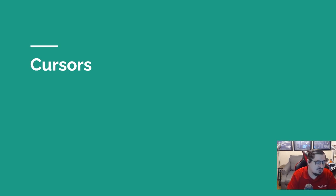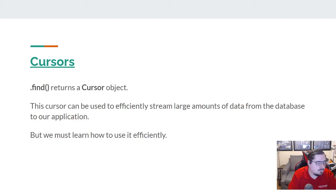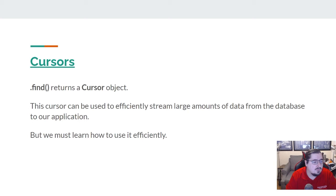I'm going to talk a little bit about cursors here. I'm not going to go too deep on them because I'll reserve most of that discussion for a later lecture. I want to give a little bit of intro to what a cursor is and some of the methods that are available. find() always returns a cursor object — that's how you get a cursor, you get it from a find.